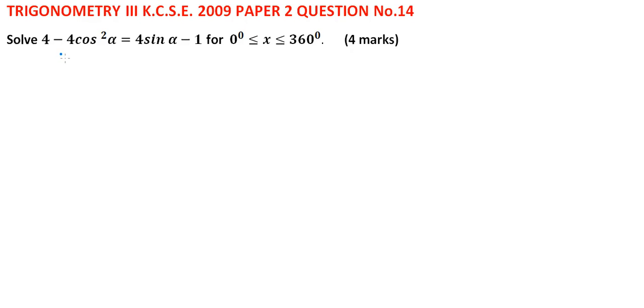4 minus 4 cos squared alpha is equal to 4 sin alpha minus 1. Let's first of all change this to sin so that we have 1 unknown.